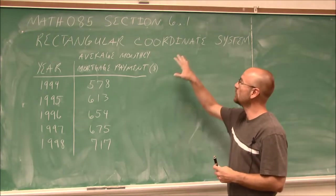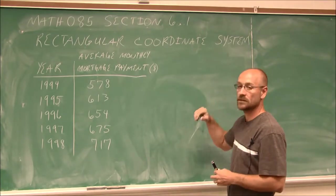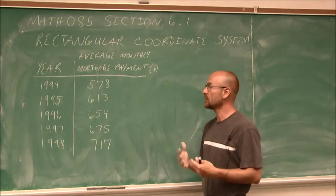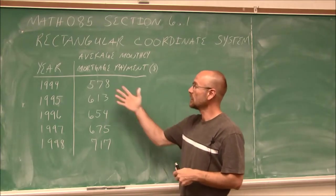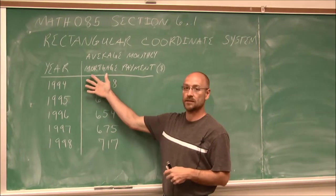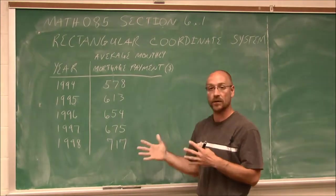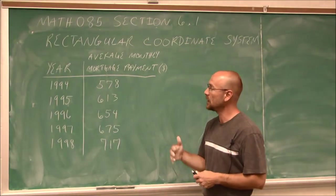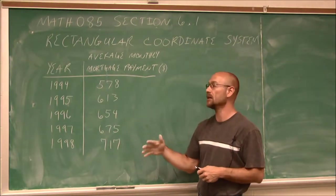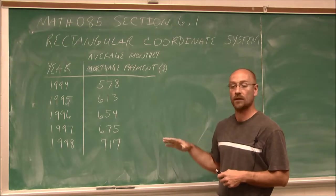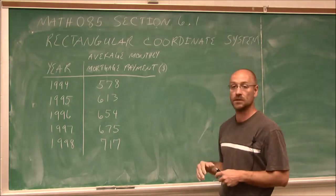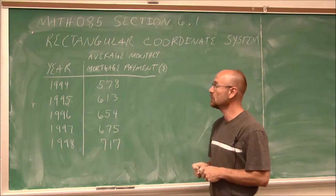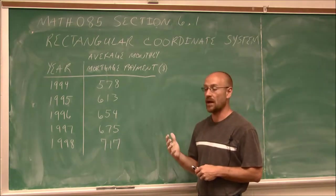Where would we use a rectangular coordinate system? Let's first define some things that we come across in the real world, like maybe we have a set of data, or we're comparing two different things. If we recall from section 4.9, we introduced reading graphs. A Cartesian coordinate system is one of the most common graphs that we use, especially in mathematics.